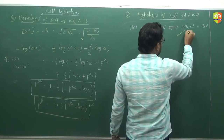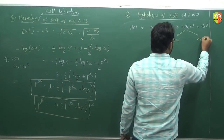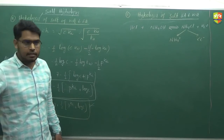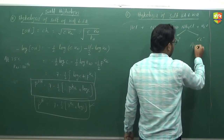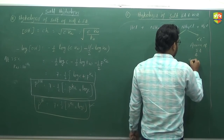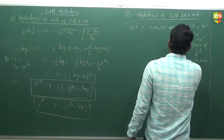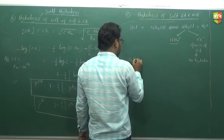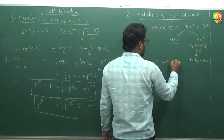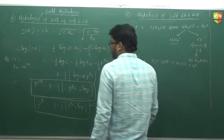The ions we get here are NH4⁺ and Cl⁻. Cl⁻ is the anion of a strong acid, so hydrolysis is not possible for Cl⁻. Only NH4⁺ will undergo hydrolysis. The reaction is NH4⁺ plus H2O, which forms NH4OH plus H⁺, so the solution is acidic in nature.